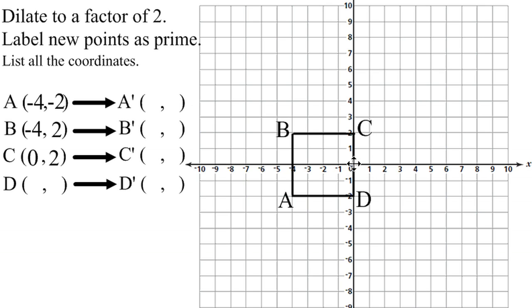D is neither left or right, and it's down 2, so 0, negative 2 for down 2.